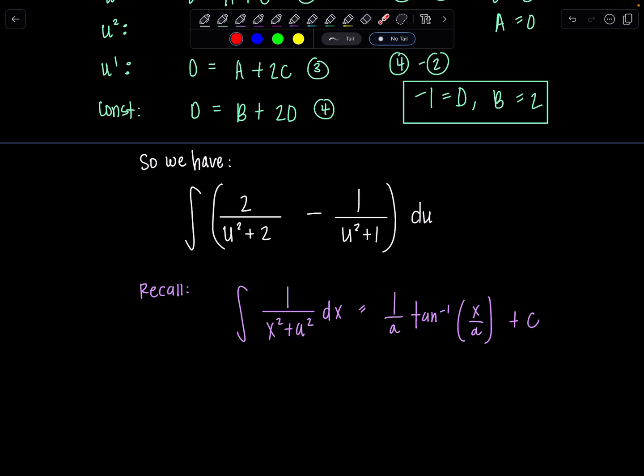You have one over a, so the square root of that constant out front, and then tan inverse of x over a. So the argument also gets divided by a. So looking over here, I can see since I have two, that means a is radical two.